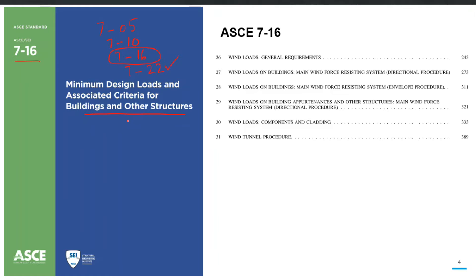Most Asian countries have recently shifted their design practice from UBC 97 to the IBC approach. IBC started from 2000 and has been routinely updated every three years: 2003, 2006, 2009, 2012, 2015, 2018, and finally IBC 2021. This International Building Code is currently being followed in many Asian countries for conventional structural design purposes.